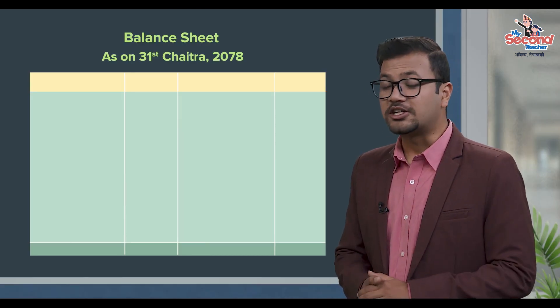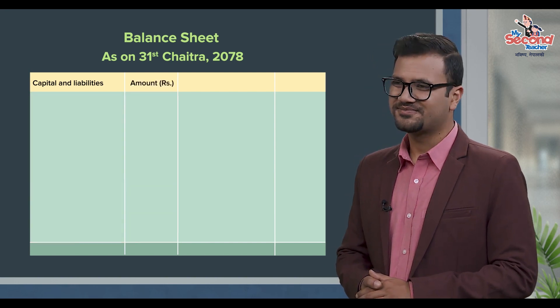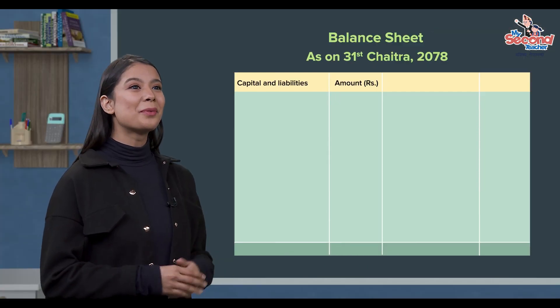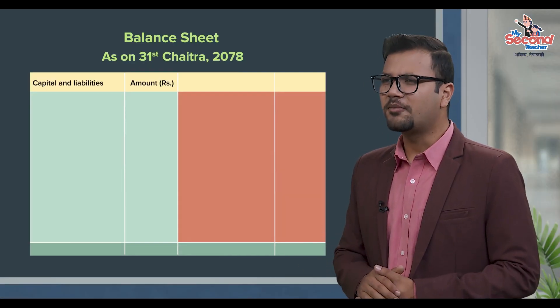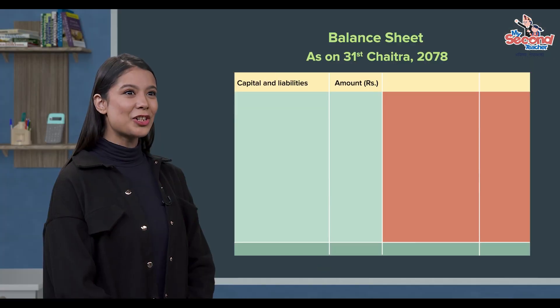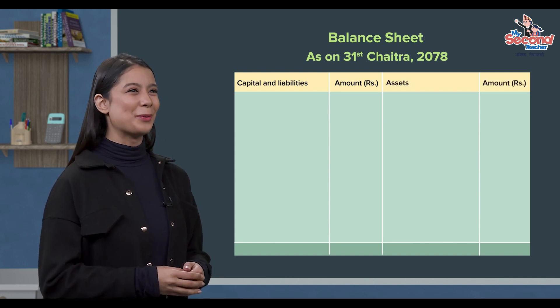The balance sheet has a left side column for capital and liabilities, and other columns. How to arrange the balance sheet as of 31st Chaitra 2078? On the right side column, arrange assets and the amount. If you want to arrange a format, you can arrange items and record them in order on each side.